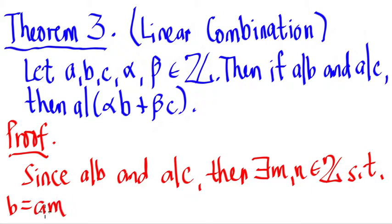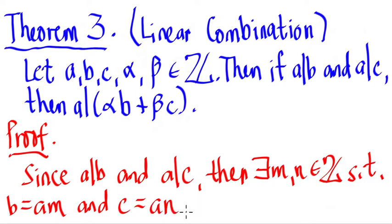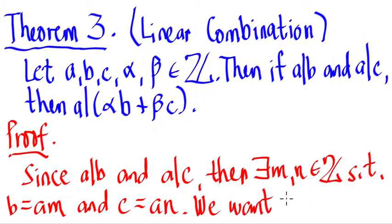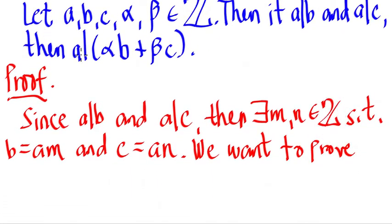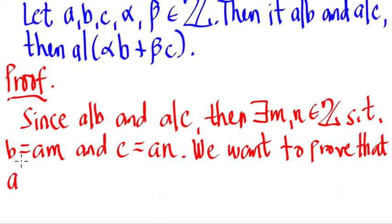Meaning there's a certain M — if we multiply that M to A, it will give us B. And C is equal to A times N, meaning there's a certain N — if we multiply that N to A, it will give us C. So we want to prove that A divides the quantity alpha B plus beta C.